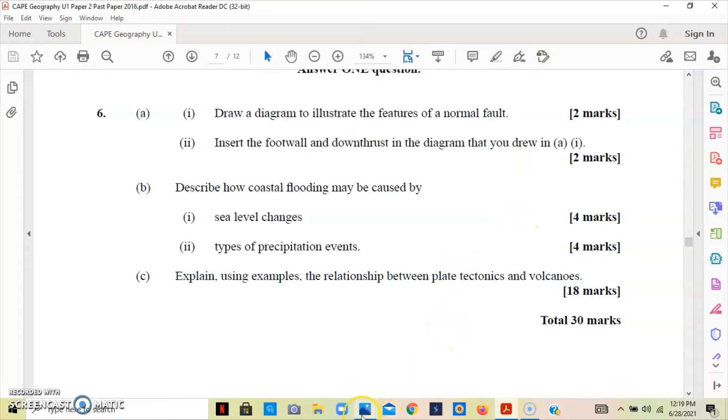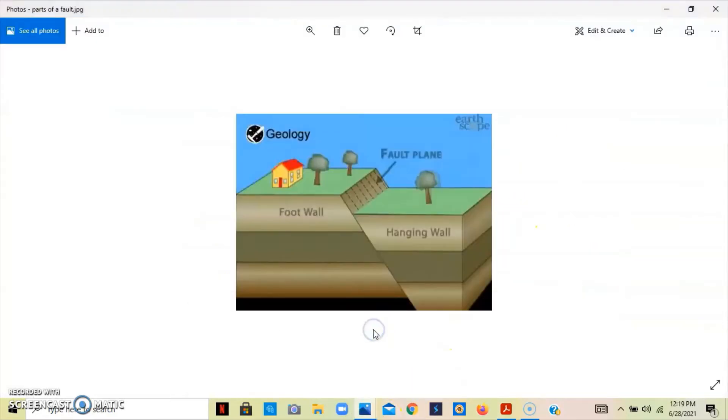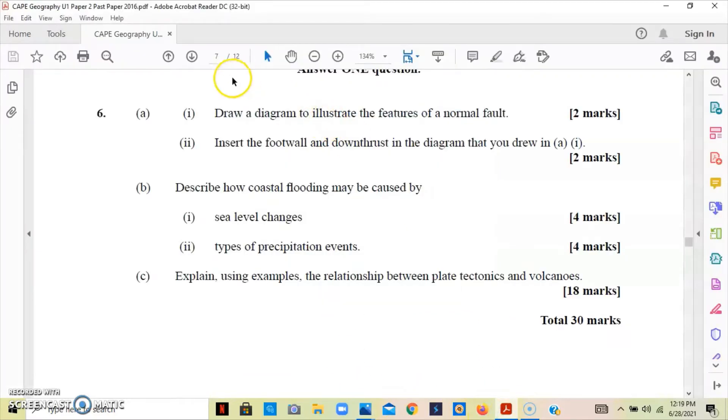Question number 6a part one asks that we draw a diagram to illustrate the features of a normal fault. Now I'm going to show you a normal fault. A normal fault is basically caused by tensional forces where the hanging wall drops in relation to the foot wall. Once you have that, you should get two marks.